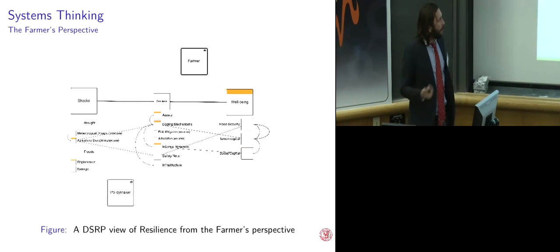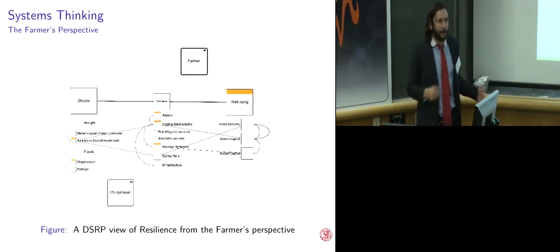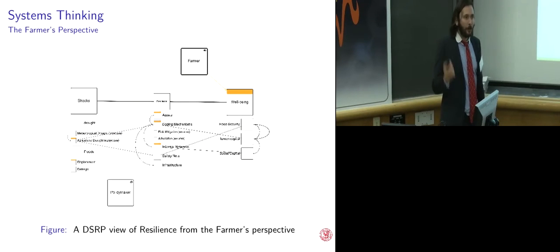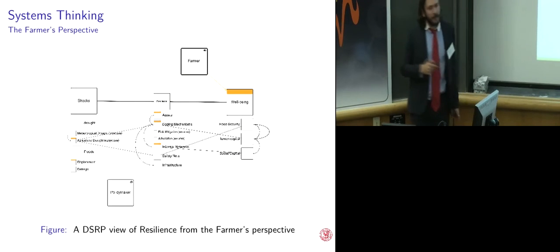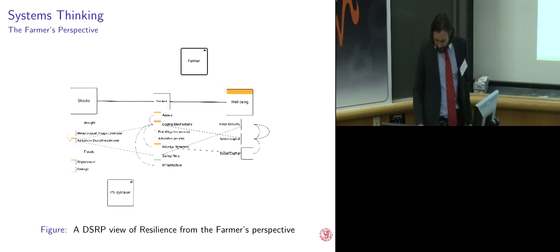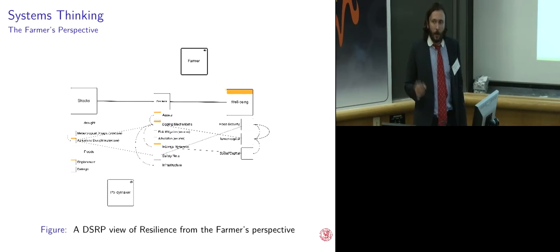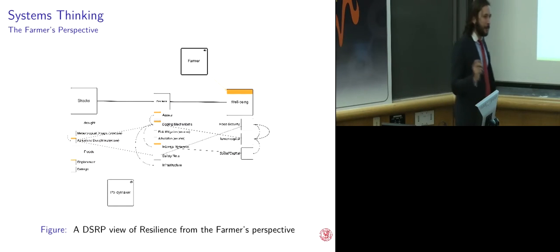What does the farmer care about? Well, the farmer cares about themselves and what is important to them. They care about their well-being and how all these things that we measure, whether it's human capital, food security, social capital, feeds into that well-being. They care about their assets, but they also care about their informal networks, their families, their friends, how those help them cope. And when it comes to drought, they don't care so much about what the satellite says. They care about the drought's effect on their own crops. Also, notice, in neither case is resilience being directly observed. We cannot directly observe resilience.